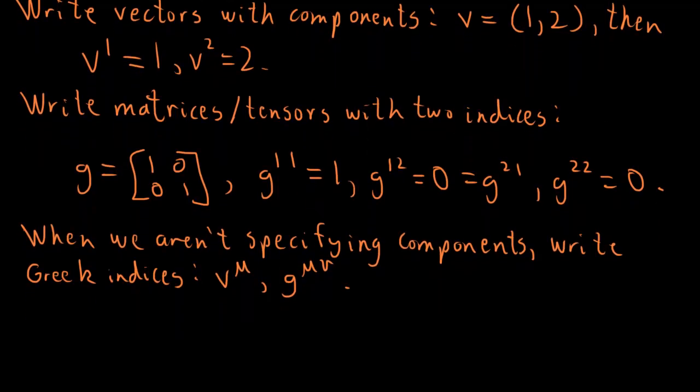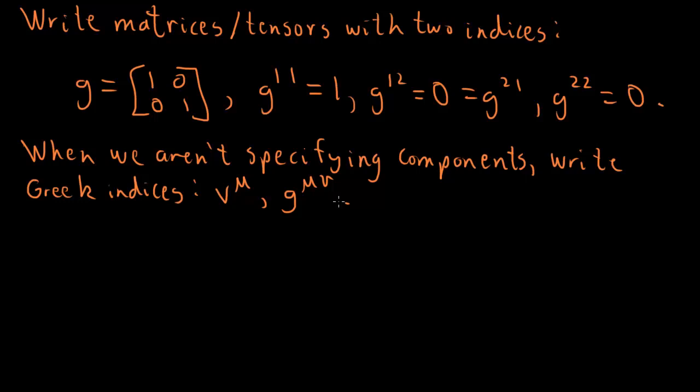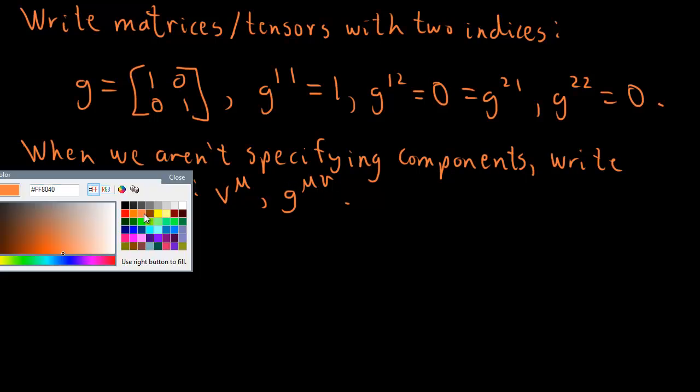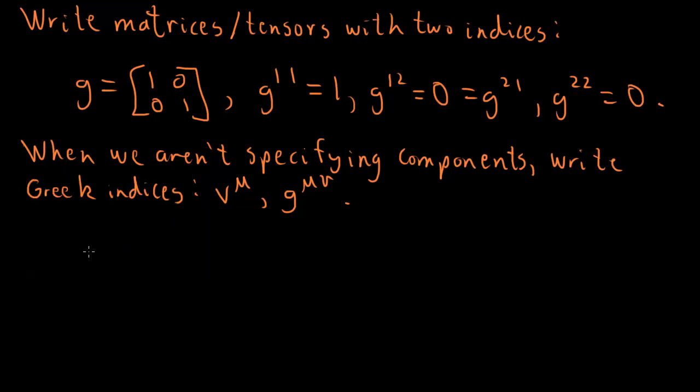And now we want to have a better notation for these sorts of sums that we were doing. So remember from the previous video that when we had, for example, ds squared, we wrote this as this matrix product. So dx, dy, and 1, 0, 0, 1, and this was dx, dy, like this.